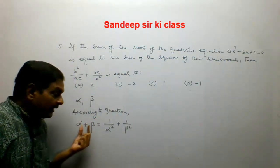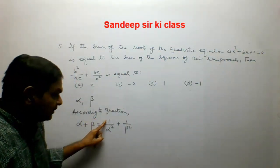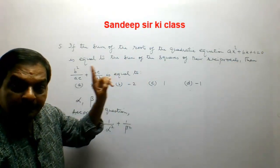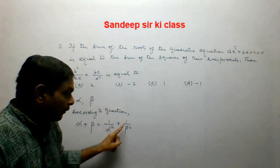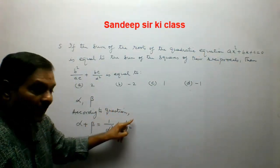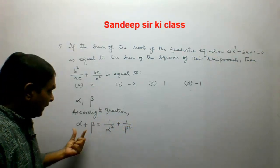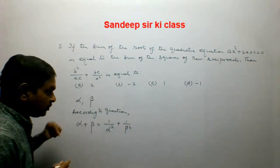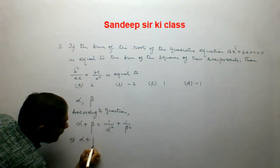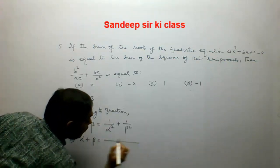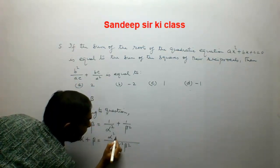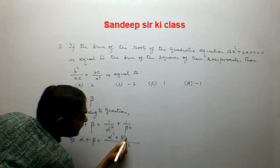The reciprocal of alpha is 1/α, so its square is 1/α². The reciprocal of beta is 1/β, so its square is 1/β². This gives us the sum of the squares of the reciprocals. Simplifying, alpha + beta equals (β² + α²) / (α²β²), where α²β² is the LCM.